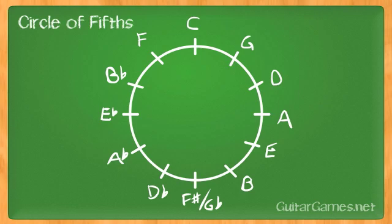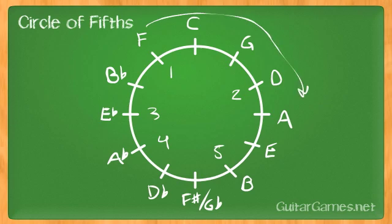Just a quick review: we talked about what a fifth is — C, D, E, F, G — and how B to F sharp is the tricky one, since it's not B to F but B to F sharp. We used the circle to find the number of sharps in a key and the number of flats. Then we used the circle to find the order that the sharps occur, starting there, and the order in which the flats occur. I hope this circle helps consolidate a lot of different pieces of information — knowing how many sharps or flats are in a key, knowing what they are, and all of that.